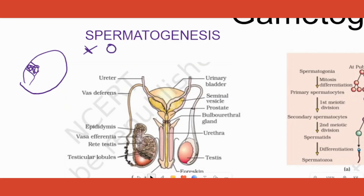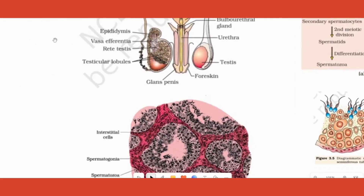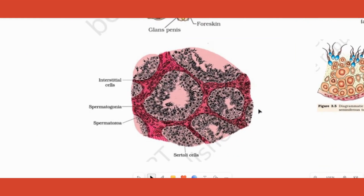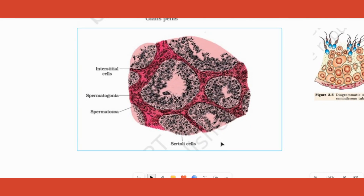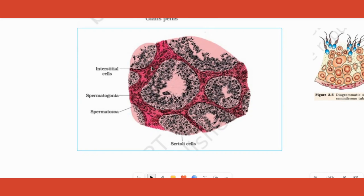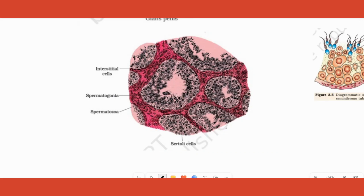Let's say this is the tube — we cut it across and we are observing this part. Inside this tube, what do you see? The tube's name is seminiferous tubule. Inside that tube you find two important cells: one is spermatogonia, otherwise called the male germ cells, and one more type of cell is sertoli cells. Both are equally important for the production of sperm.